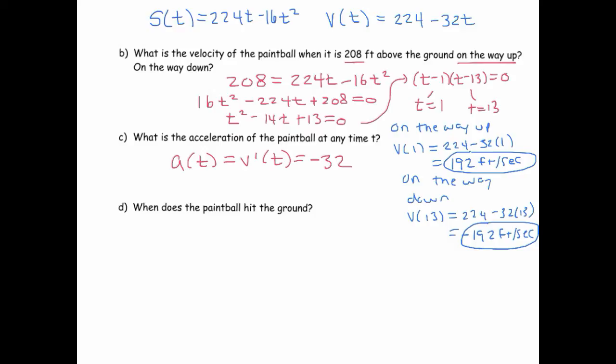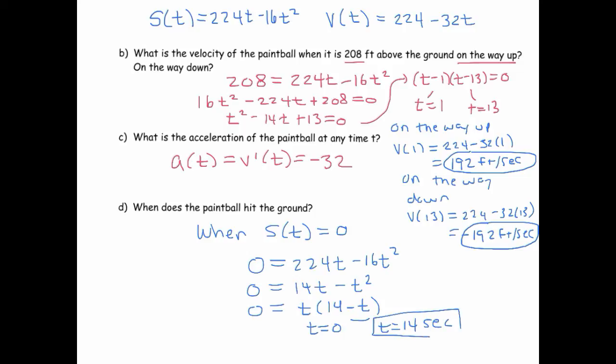And then lastly, when does the paintball hit the ground? Well, we know it hits the ground when our position function is equal to 0. So let's set our position function equal to 0. And again, I think you can divide through by 16 conveniently. So this is 14t minus, sorry, through by 16, minus t², and then this gives us if you factor out a t, 14 minus t. And so it looks like at t equals 0, the ball hits the ground, but of course that's not really what happens because that's when the paintball is released, but also when t is equal to 14. So it hits the ground after 14 seconds.